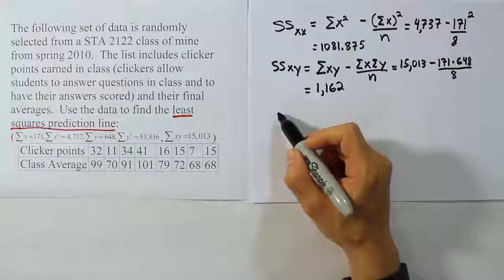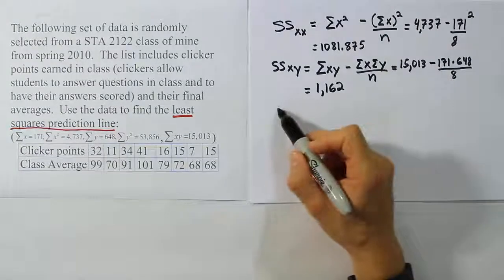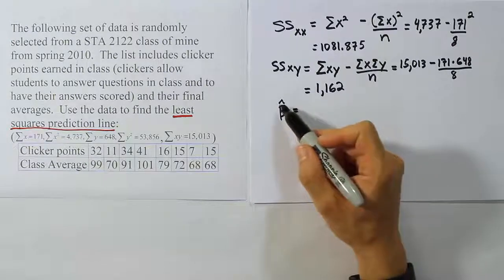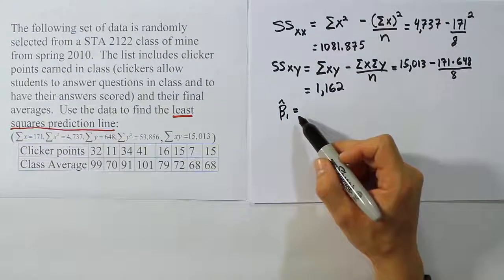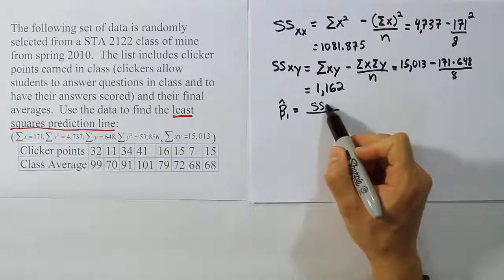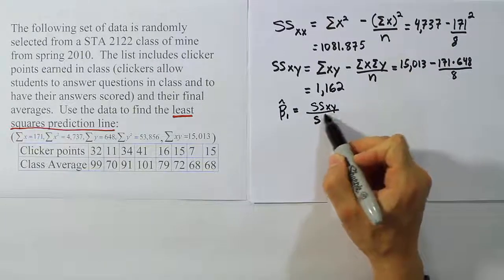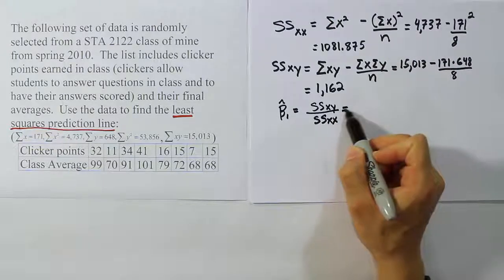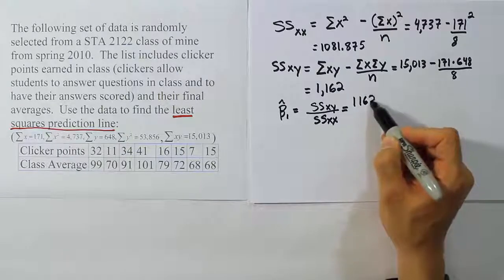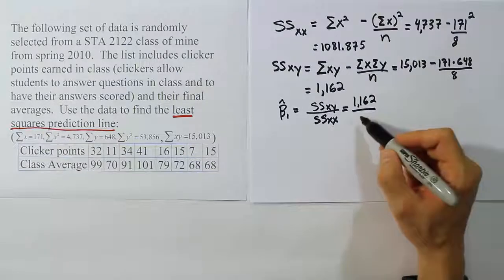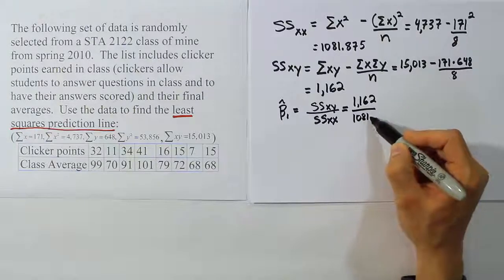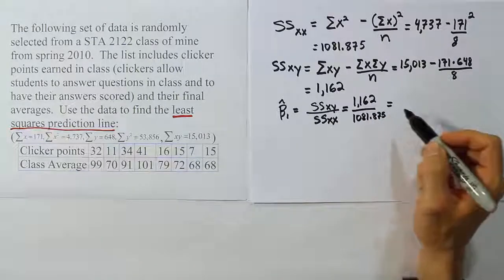Now from here we're going to use that to determine our slope, which is beta 1 hat. It's our estimate of the slope. Let's go ahead and plug in the formula. It's the sum of squares XY, the mixed term, over the sum of squares for the X term. The sum of squares for the mixed term we worked out to be 1,162. That'll be divided by the sum of squares for the X term, which is 1,081.875.